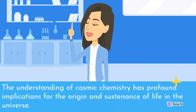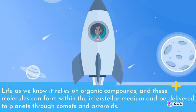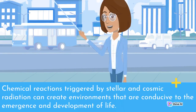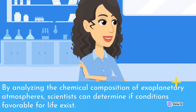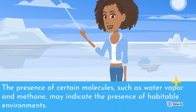The understanding of cosmic chemistry has profound implications for the origin and sustenance of life in the universe. Life as we know it relies on organic compounds, and these molecules can form within the interstellar medium and be delivered to planets through comets and asteroids. Chemical reactions triggered by stellar and cosmic radiation can create environments conducive to the emergence and development of life. The search for exoplanets has provided valuable insights into the potential habitability of other worlds. By analyzing the chemical composition of exoplanetary atmospheres, scientists can determine if conditions favorable for life exist. The presence of certain molecules, such as water vapor and methane, may indicate habitable environments.